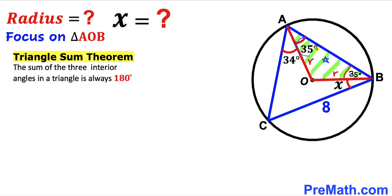Each base angle is 35 degrees, so the remaining angle AOB must be 180 minus 70, which gives us 110 degrees, since the sum of all three angles is 180 degrees.